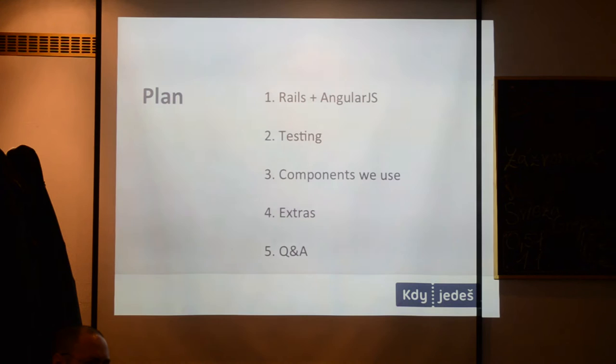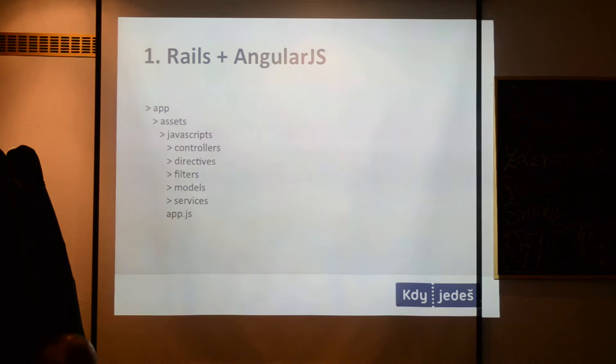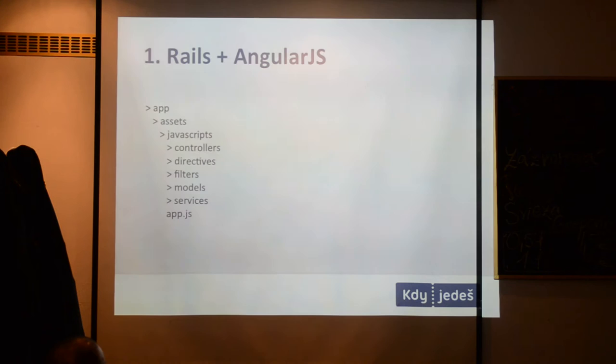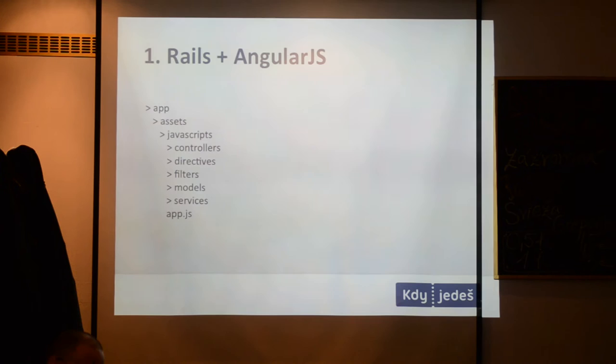This is the structure for putting AngularJS into your Rails application. Normally we have an app folder, and inside it the Rails structure has controllers, models, and all the server-side stuff. On the client side, we take that same structure and put it inside the app as JavaScript — we again have controllers, models, some services, and other things which together create the client-side application.